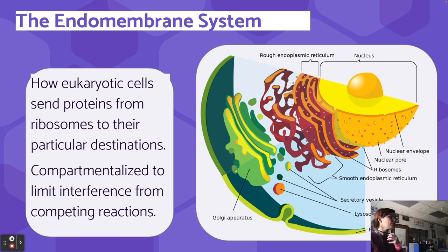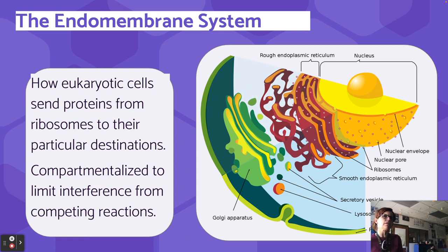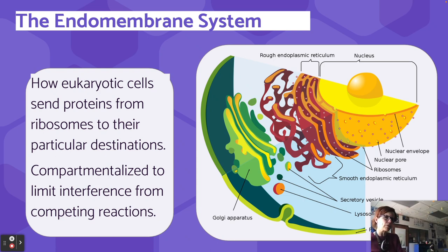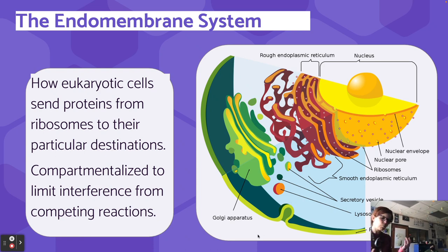The endomembrane system: basically how eukaryotic cells manufacture and send proteins out. Proteins get made on the ribosome, get packaged into the endoplasmic reticulum, then into a vesicle, which gets carried to the Golgi. The Golgi modifies it by adding or removing things, then packages it again into a vesicle. Then it is secreted out of the cell — so it's a cell product in that case.